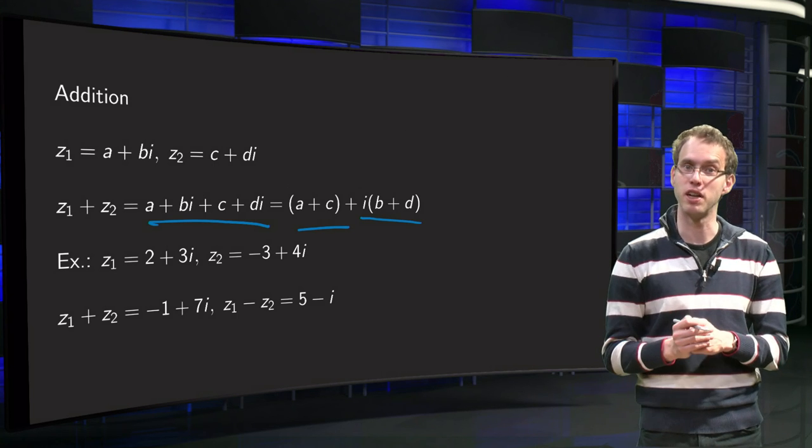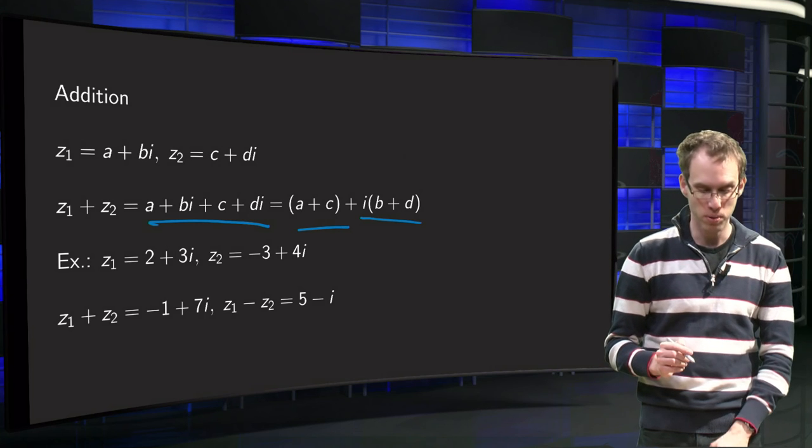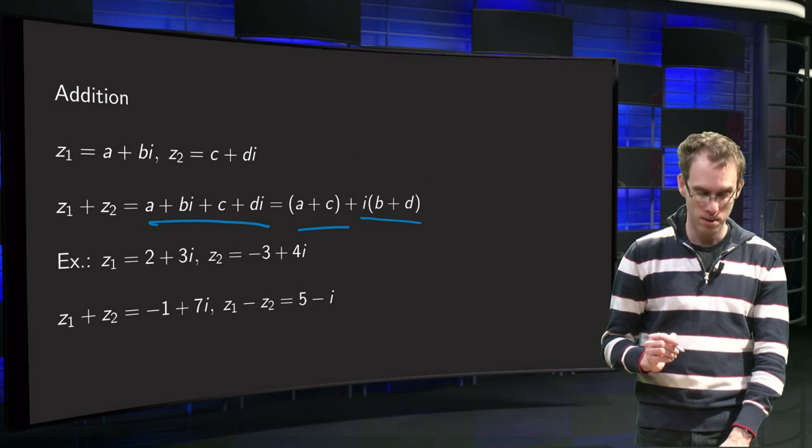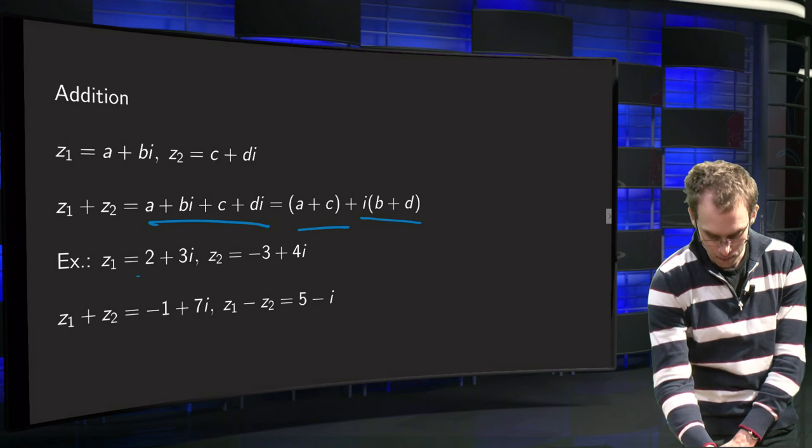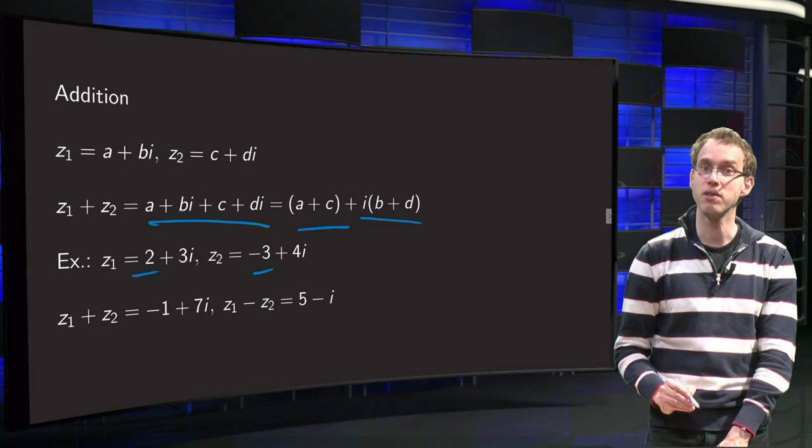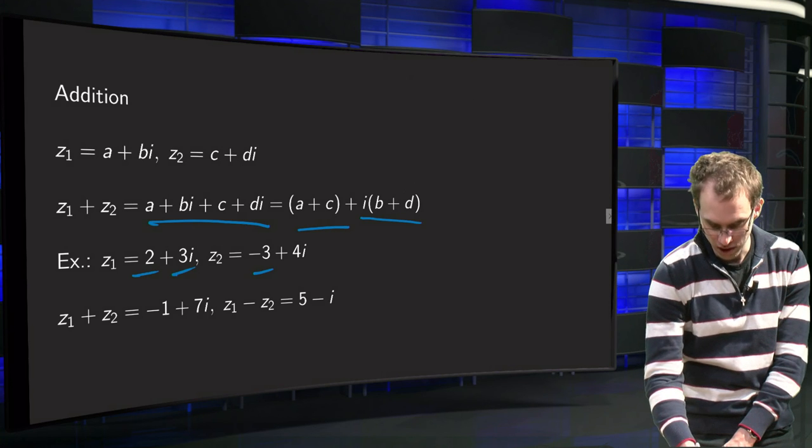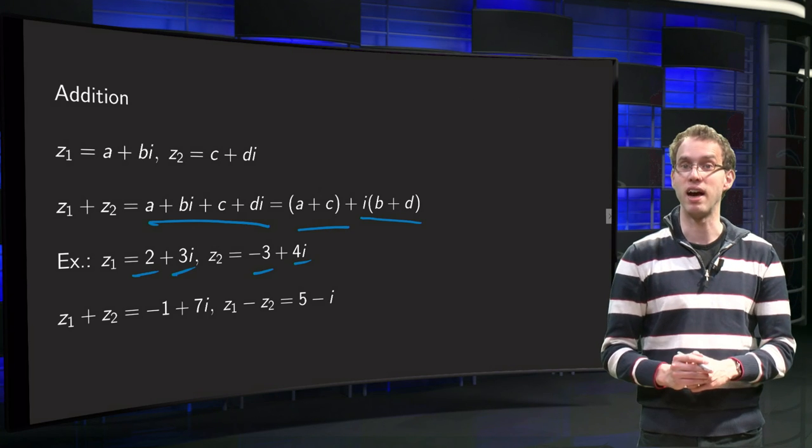So let's do an example. 2 + 3i plus -3 + 4i. We add the real parts, 2 and -3, which yields -1. And we add the imaginary parts, 3i and 4i, which yields 7i.